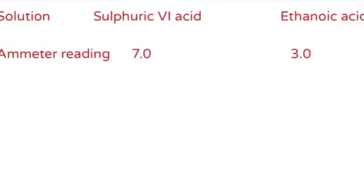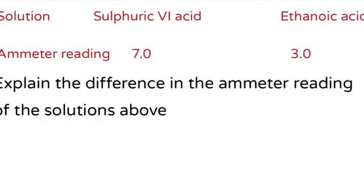Here is a sample case. Sulfuric acid has an ammeter reading of 1.0, while ethanoic acid has an ammeter reading of 3.0. Explain the difference in ammeter readings. The answer is: sulfuric acid is a strong acid, hence a strong electrolyte; therefore it is fully ionized in solution to yield many ions. While ethanoic acid is a weak acid, hence a weak electrolyte; therefore it is partially ionized to yield few ions in solution.